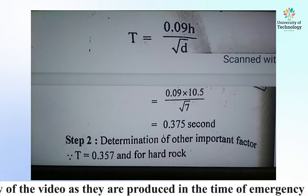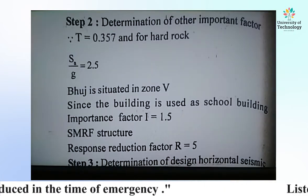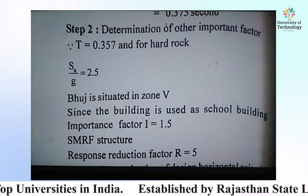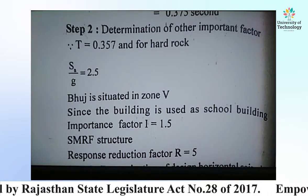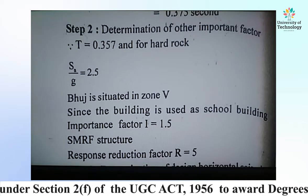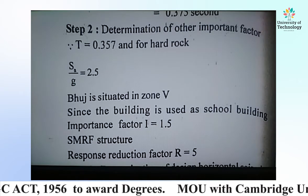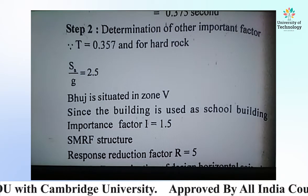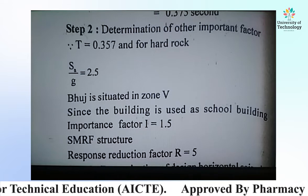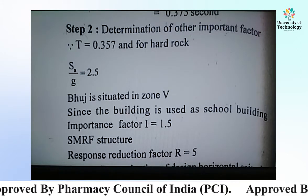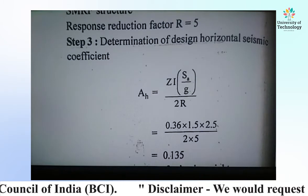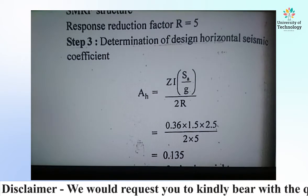Step 2: Determination of other important factors. T = 0.375 seconds. For hard rock, Sa/g = 2.5 as per code provisions. The building is situated in seismic Zone 5 (Bhuj). Since the building is used as a school building, the importance factor is I = 1.5. The response reduction factor for this type of structure is R = 5.